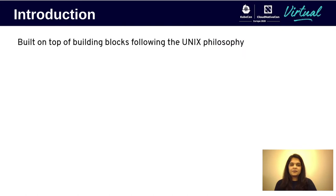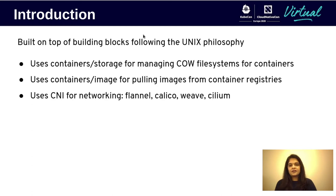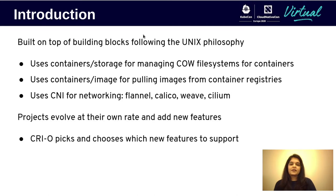The CRI-O development process embodies the Unix philosophy, which states that you should design programs that do one thing, do it well, and work well with other programs. CRI-O uses a number of components under the hood that focus on different areas of the container space, such as storage, image management, and networking. This way, each building block of CRI-O can evolve at its own rate, while CRI-O picks features that best support Kubernetes requirements.